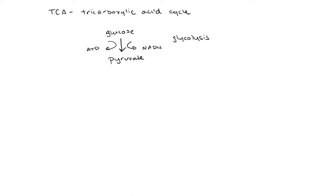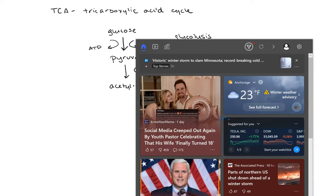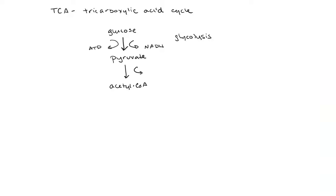Following the formation of pyruvate, pyruvate can be rapidly converted to acetyl-CoA. This is one of the many different ways acetyl-CoA can be produced. Acetyl-CoA can come from a variety of sources, but in the context of this chapter, primarily we're going to focus on the conversion of pyruvate to acetyl-CoA. And this is also going to give us an equivalent of NADH.